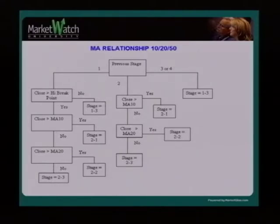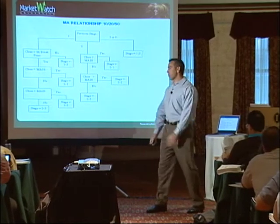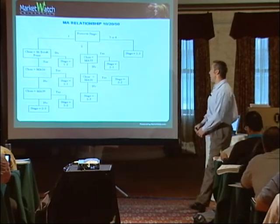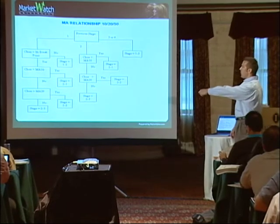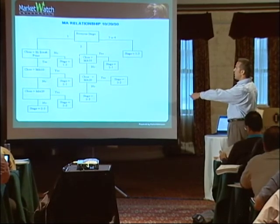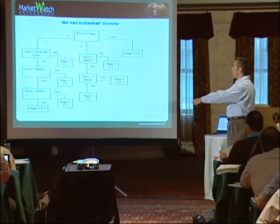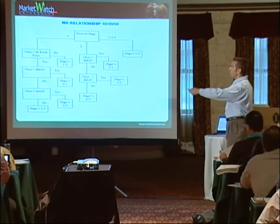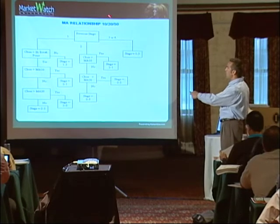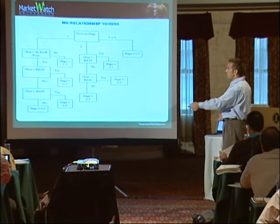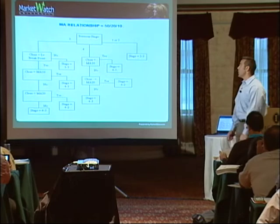That supports the rule: you always buy stage two. Always. Even if you don't pick the perfect bottom, because no one's that good. And ultimately, if the market fails and doesn't close above certain levels, we start to say, okay, we're already in stage two, or maybe we're still in stage one. But anything like the 10, 20, 50 relationship is either late stage one or early stage two.